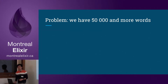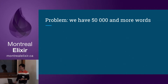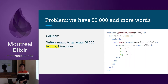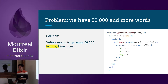Now we have a problem. We don't have just one word in English — we have 50,000 words. Are we going to write all those lemma functions? That's crazy. Actually, you don't. You write a macro to generate all those lemma functions. Macro is part of the brilliance of Elixir — it allows you to programmatically generate a lot of functions at compile time.